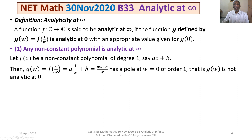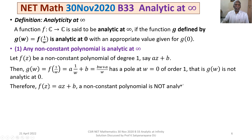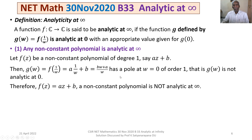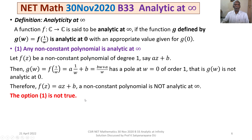Taking the LCM, g(w) = (bw + a)/w, which has a pole at w = 0 of order 1. That is, g(w) is not analytic at 0. Therefore f(z) = az + b, a non-constant polynomial of degree 1, is not analytic at infinity. This counter example extends to any polynomial of degree n: g(w) = f(1/w) will have a pole at w = 0 of order n. Therefore option 1 is not true.